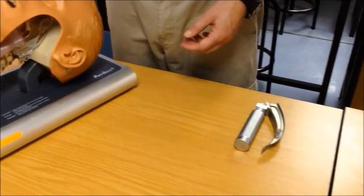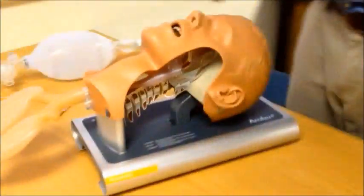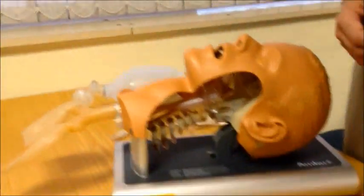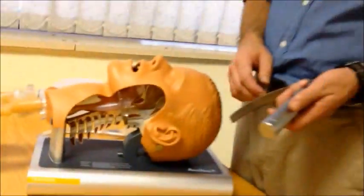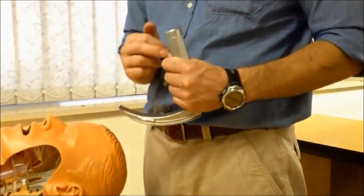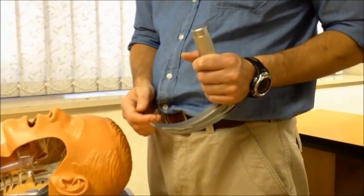Place the ET tube next to the patient on your right hand side or your dominant hand side and use your laryngoscope on the non-dominant hand. Grasp your laryngoscope in the non-dominant hand as shown. Open the blade and make sure that the light is working.